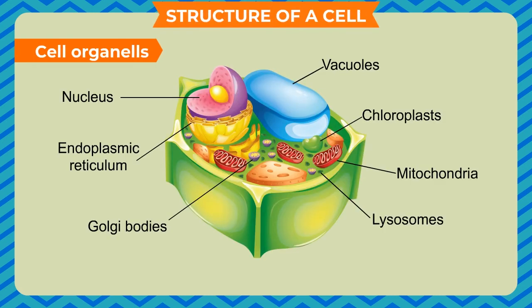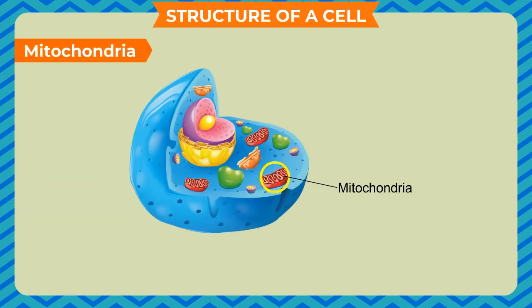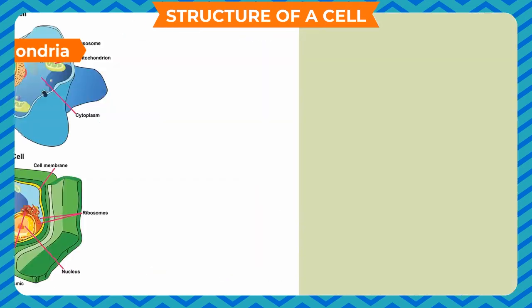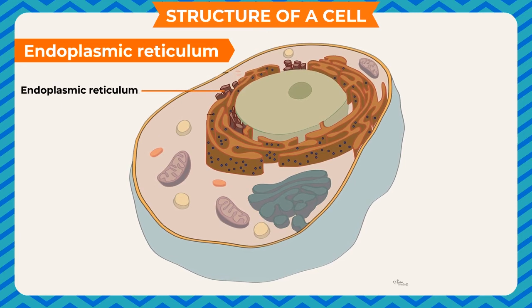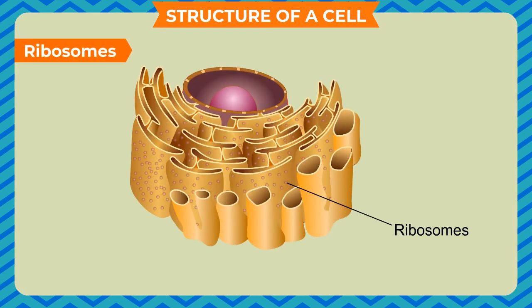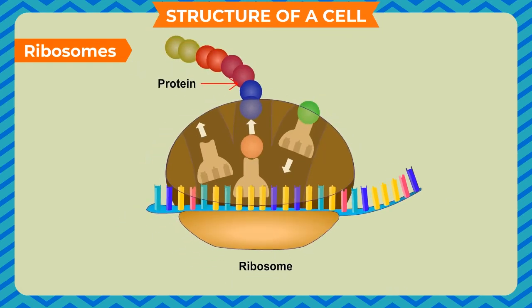Mitochondria - commonly known as the powerhouse of the cell, it produces energy by the oxidation of food. It is present in both plant cell and animal cell. Endoplasmic reticulum - helps in transportation of substances within the cell. Ribosomes - they are responsible for protein synthesis. They are present in both plant and animal cells.